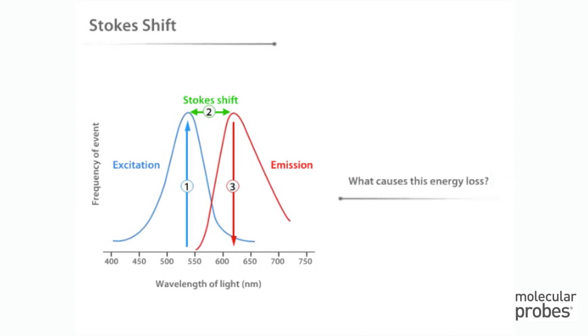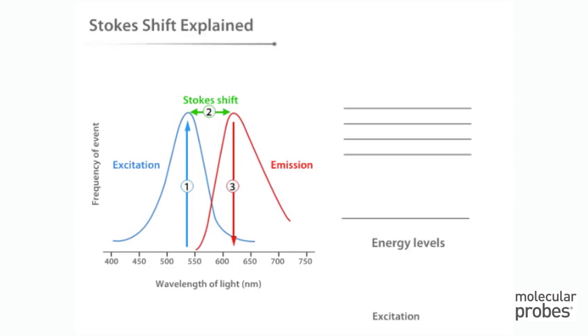So, what causes this energy loss? The Stokes shift is due to the fact that some of the energy of the excited fluorophore is lost through molecular vibrations that occur during the brief lifetime of the molecule's excited state. This energy is dissipated as heat to surrounding solvent molecules as they collide with the excited fluorophore.